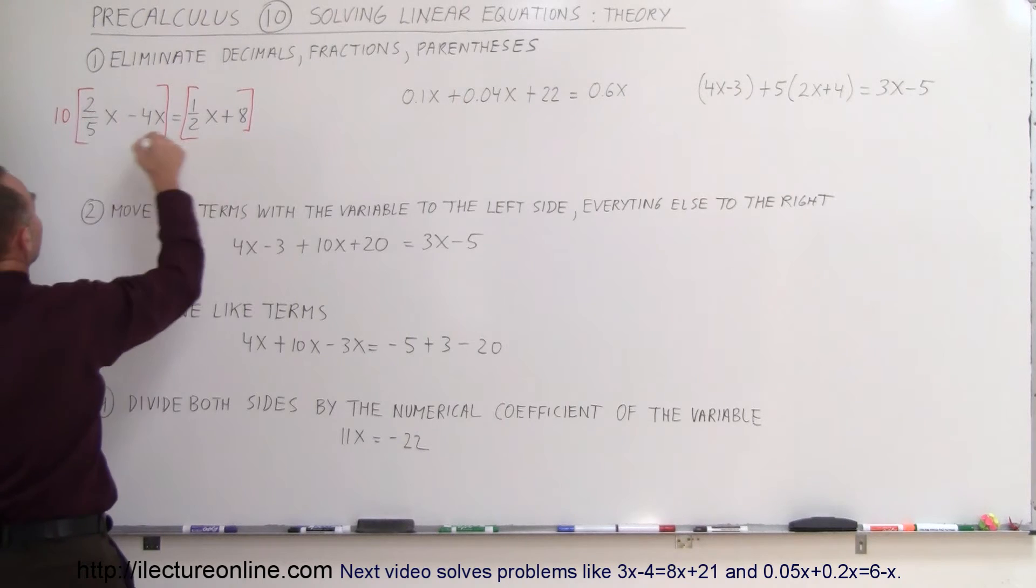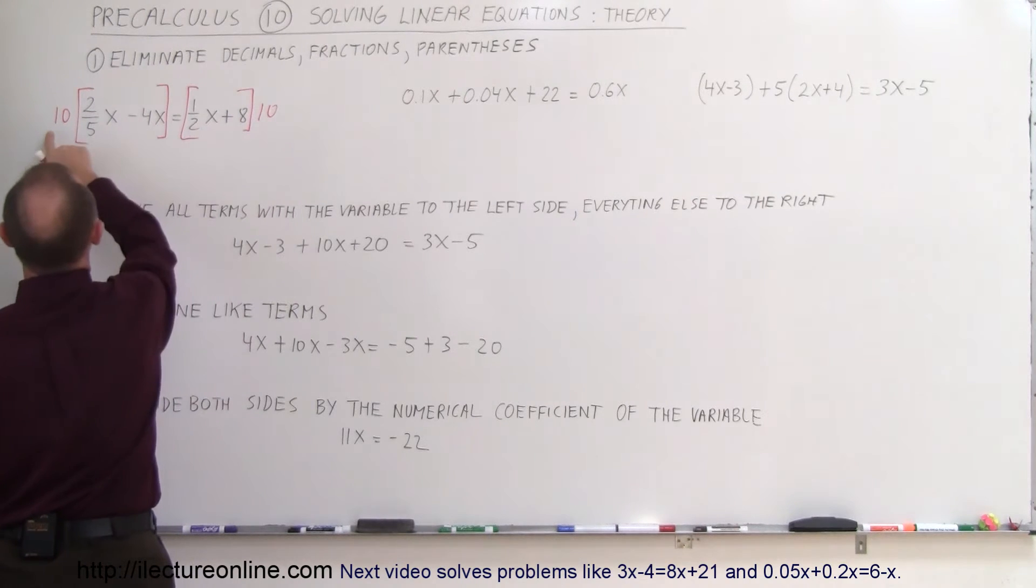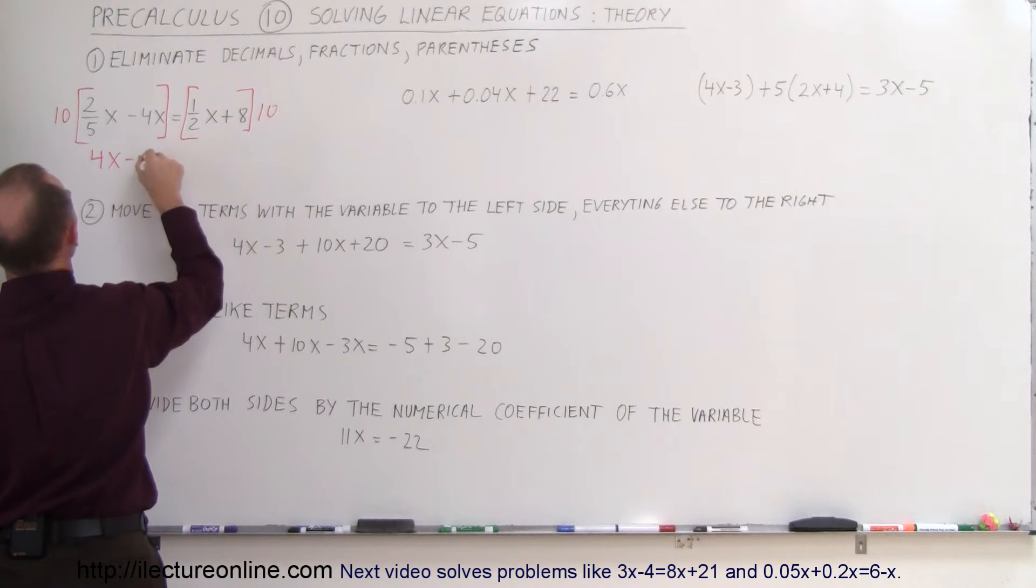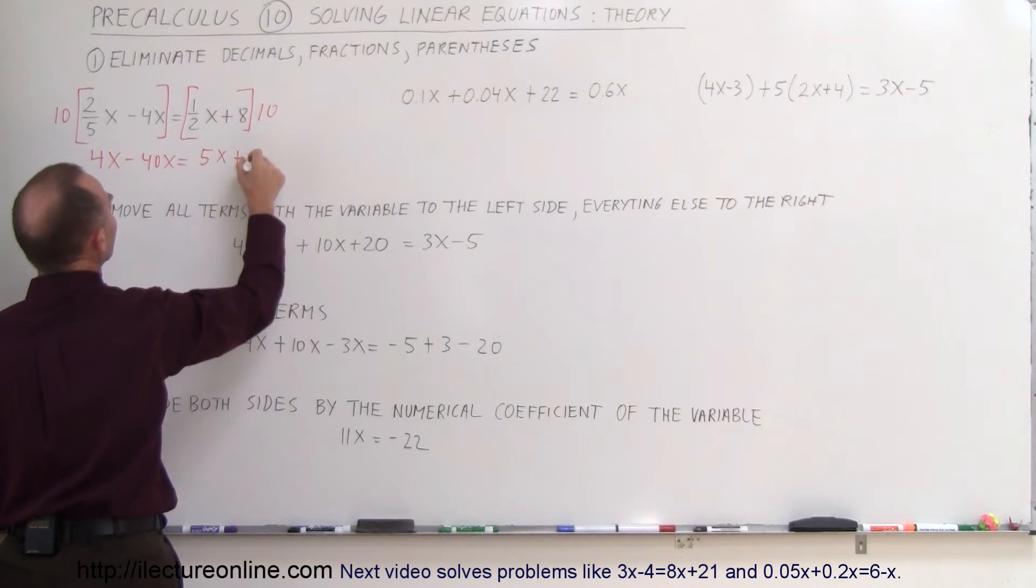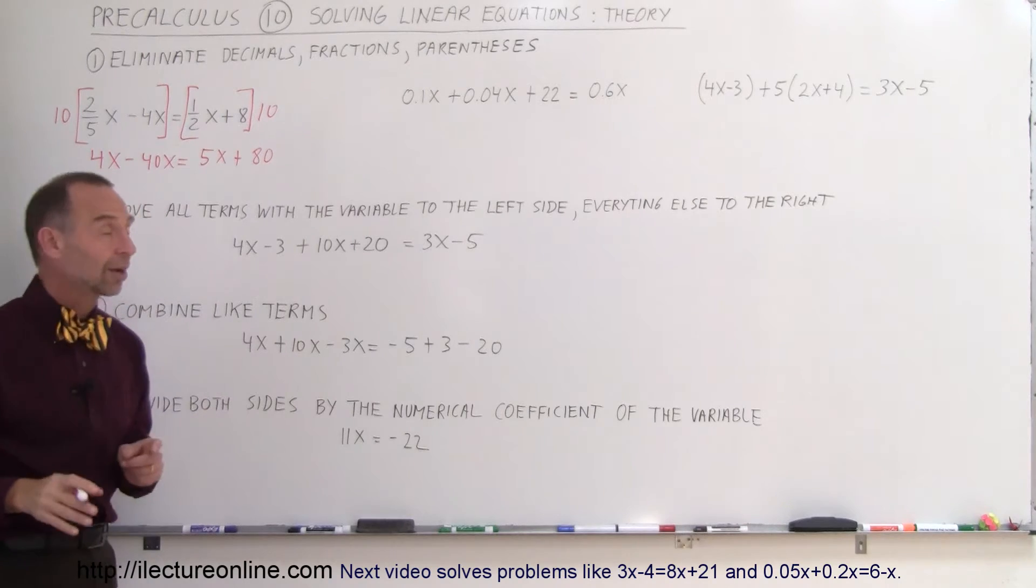When we do that here, 5 goes into 10 twice. So 2 times 2 is 4. That's 4x minus 40x equals 2 goes into 10, and 5 times 5, so that's 5x plus 8 times 10 is 80. So that's how we get rid of those fractions.